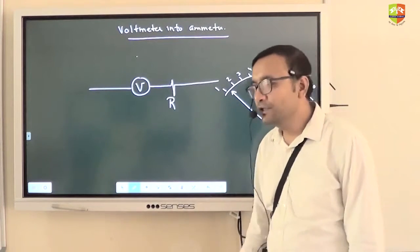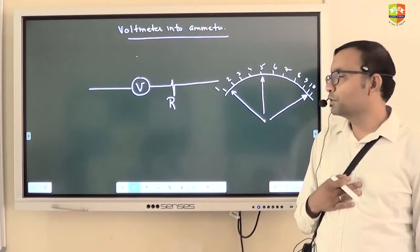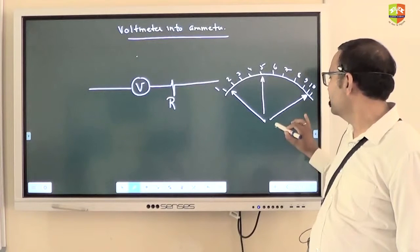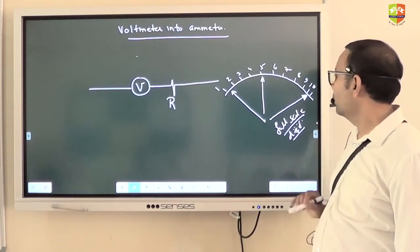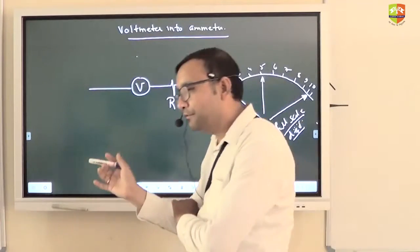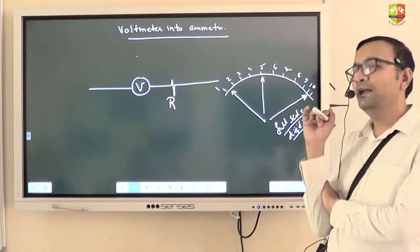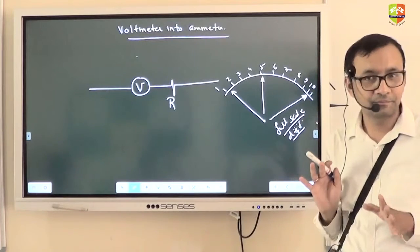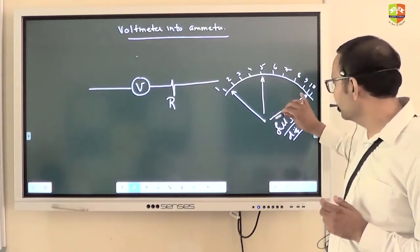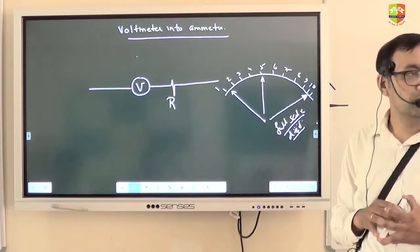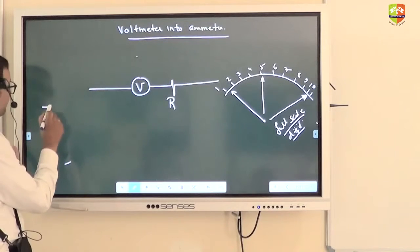Suppose I want to convert into ammeter, I should be knowing till what range the ammeter should measure. So basically there is something called full scale deflection. Full scale deflection is a deflection after which it will not show any reading. So I should know that if I am building an ammeter, I can maximum measure up to let's say 5 ampere. After that this pointer doesn't move, so you will not be able to find out whether it is 5.2 or 5.5, both of them the pointer is stuck here.